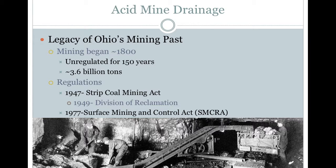In 1947, the state of Ohio passed the Strip Coal Mining Act. This act put a tax on each ton of coal, which would be used to reclaim an area once the mine was no longer active. In 1949, this act was given teeth by creating the Division of Reclamation. These steps, however, did not improve abandoned mines that pre-dated 1947.